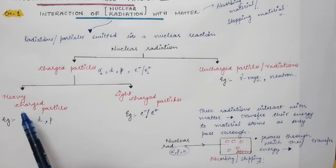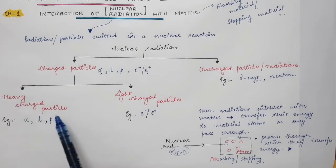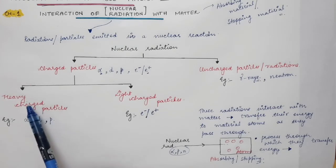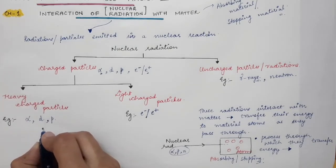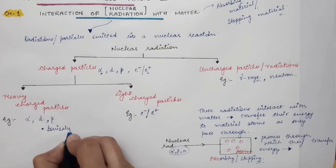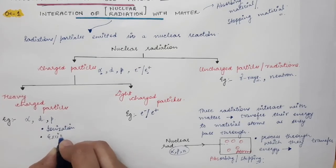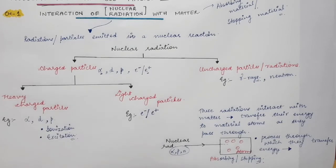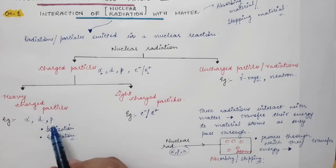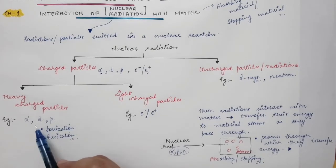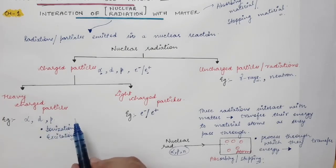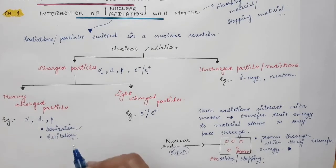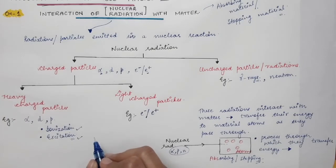For heavy charged particles, there are two main processes by which they interact with matter. First is the ionization process, and second is the excitation process. When alpha particle, deuteron, or proton enters a medium, they carry a certain amount of energy and move with certain velocities. They can either cause ionization or excitation of the atoms of the medium.